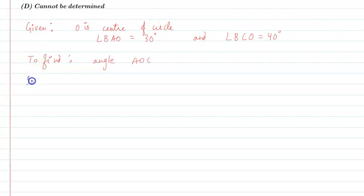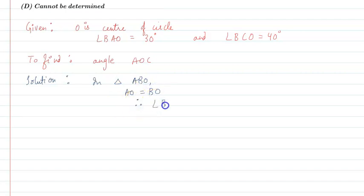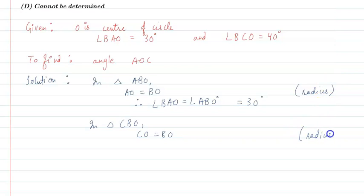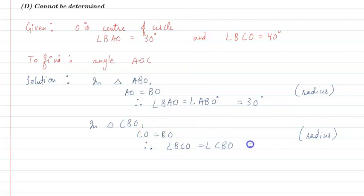In triangle ABO, since AO is equal to BO, therefore angle BAO is equal to angle ABO, which equals 30 degrees. Similarly, in triangle CBO, since CO is equal to BO (both radii), by the property that angles opposite equal sides are equal, angle BCO is equal to angle CBO, which equals 40 degrees.